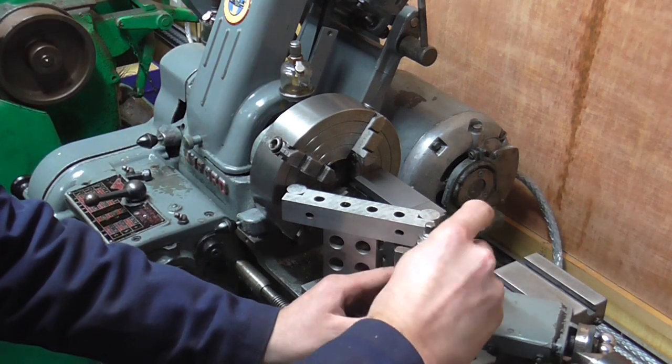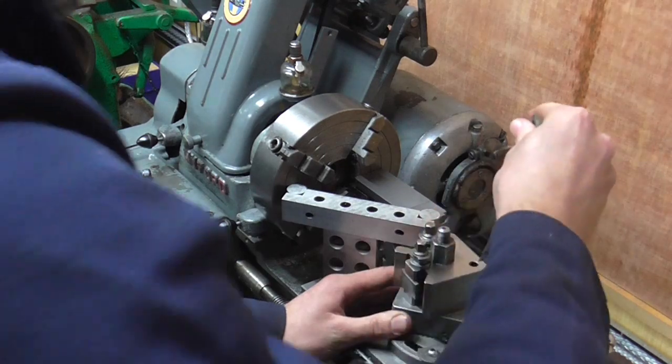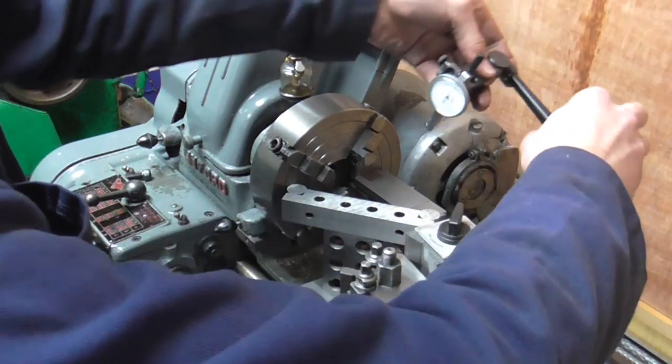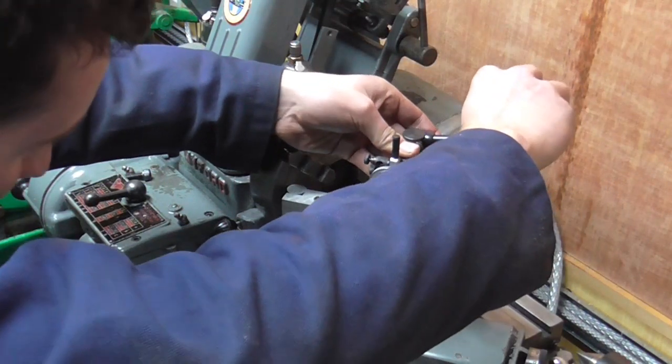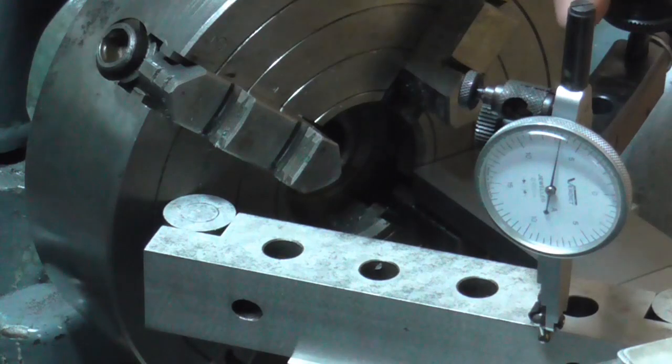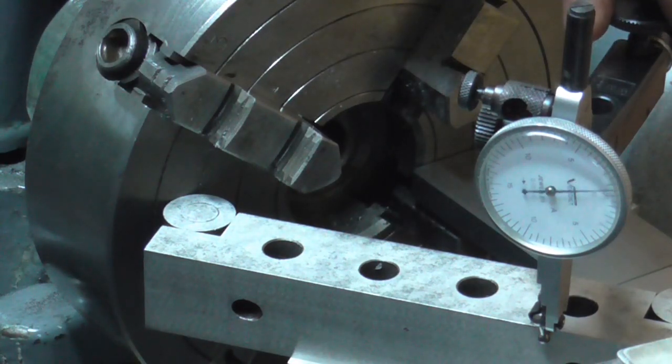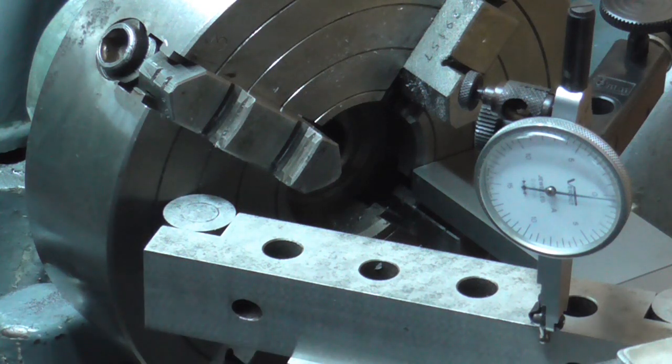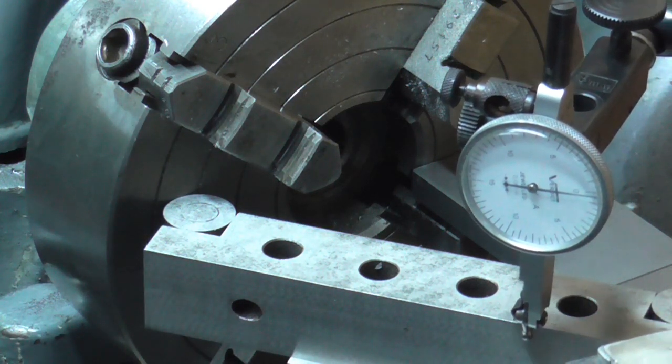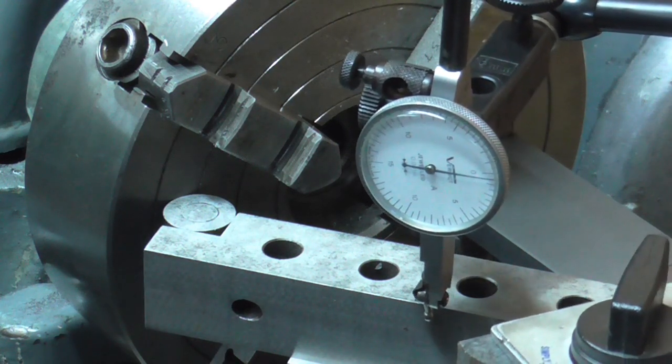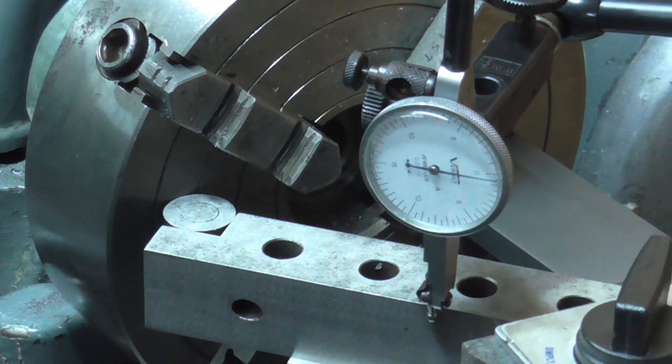So I can turn this to 36 and a bit. I'm just going to nip these up for now and then I'm going to mount a clock on the back here. So with the clock set up there I can dial it into zero, and I'm now going to wind the cross slide back and forth until I get it parallel.